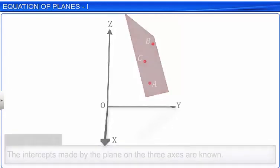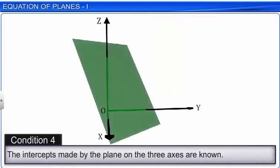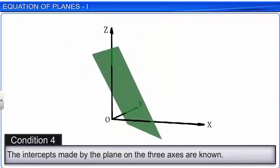A special case of condition 3 is that the three given non-collinear points through which the plane passes are points A, B and C, where the plane cuts the x, y and z axes respectively. Thus, in this case, the intercepts made by the plane on the three axes are given, and the equation of the plane is called the intercept form.